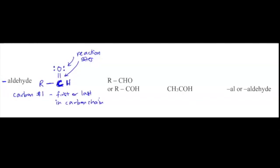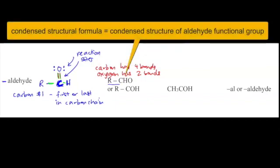Carbon forms four bonds and oxygen always forms two bonds, as shown in the functional group where the oxygen has two bonds coming out of it and the carbon has a total of four bonds. When you have the condensed structure, written as CHO, there is an implication that this is a double bond between carbon and oxygen.